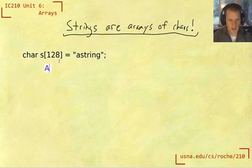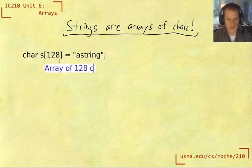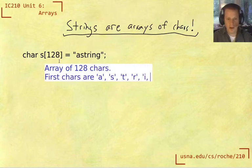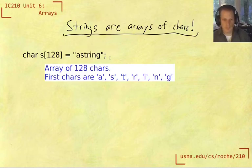So first of all, this array of 128 chars. And the first chars in the array are a, s, t, r, i, n, and g. Okay so that's because that's what I put. So this is the first 1, 2, 3, 4, 5, 6, 7 chars.